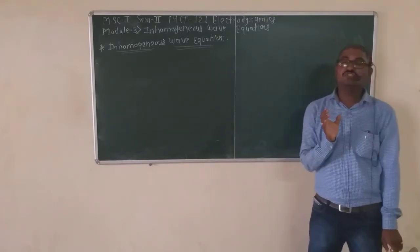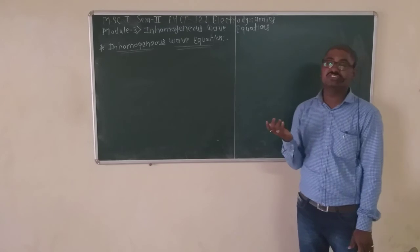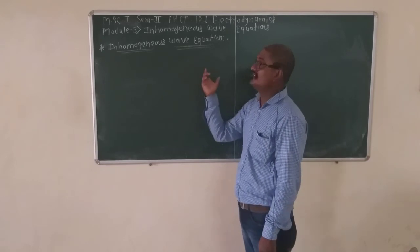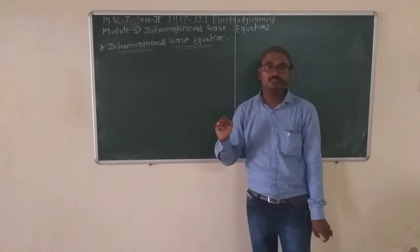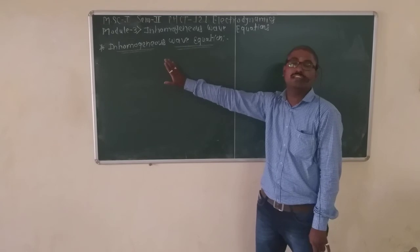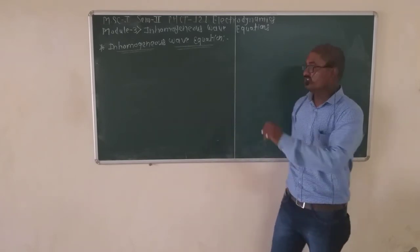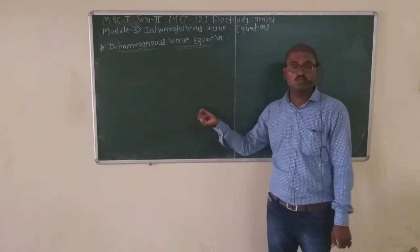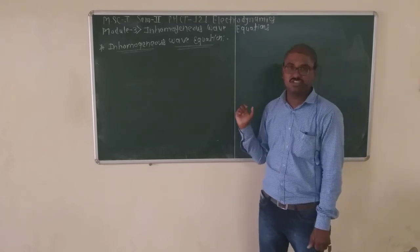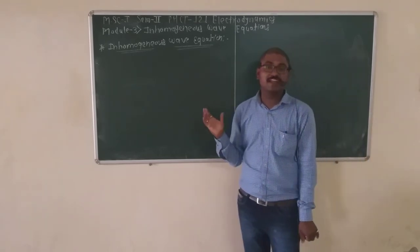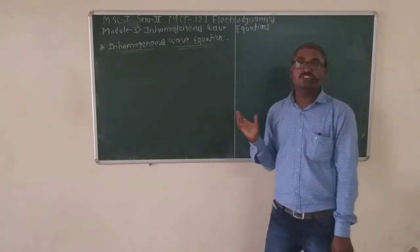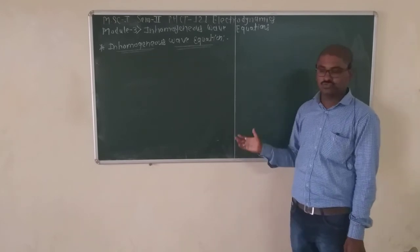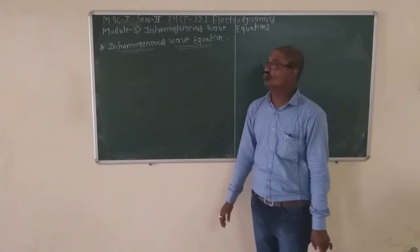Firstly, let's see the definition of the inhomogeneous wave equation. What is meant by the inhomogeneous wave equation? The definition is: the wave equation describes the propagation of electromagnetic waves generated by a non-zero source — that is, non-zero current and charge. These are the inhomogeneous wave equations.